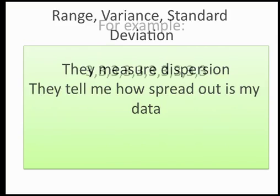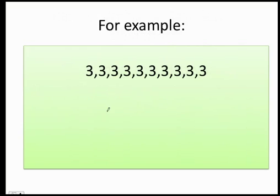Let's see an example. Let's say that you have this data: 3, 3, 3, 3, 3, 3. See here that everyone is the same, so there's actually no dispersion.